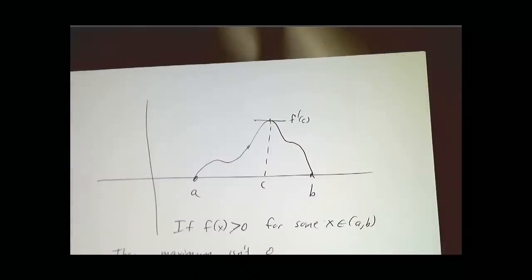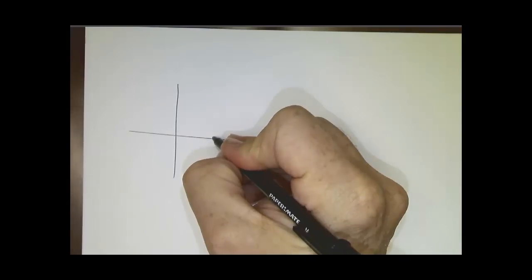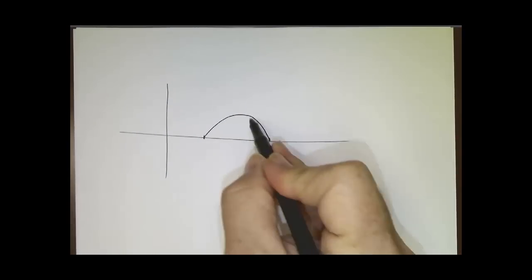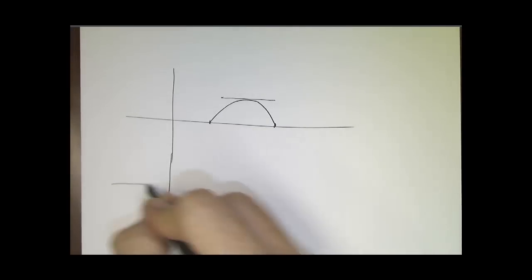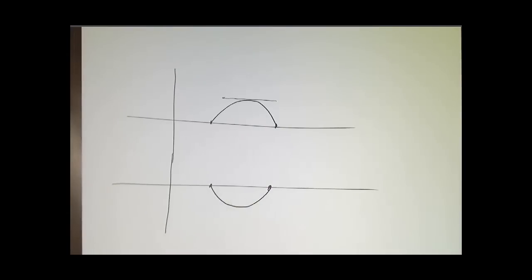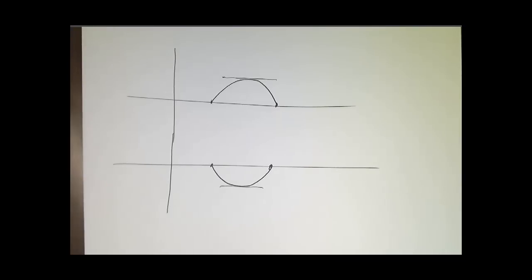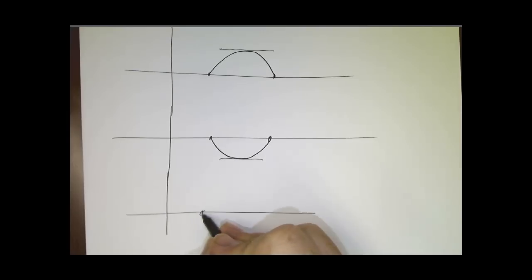So there are three pictures to keep in mind. The first picture is of a function that rises above the axis. If it ever goes above the axis, then at the maximum, the derivative is zero. The second picture is of a function that goes below the axis. If it ever goes below the axis, then at the minimum, the derivative is zero. The last picture is of a function that never goes up and never goes down. And in that case, the derivative is zero absolutely everywhere in the middle.